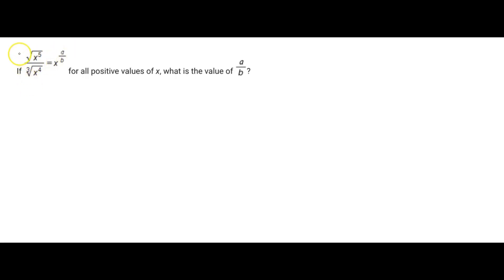So first off, for this radical up here, for both of these radicals actually, we can simplify it and rewrite it. So square root of x to the fifth using exponent properties and radicals, we can determine that is just 5 over 2 as the power.